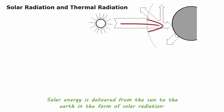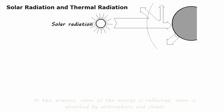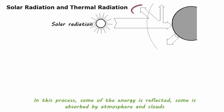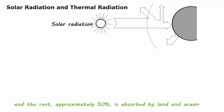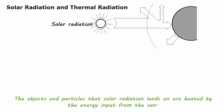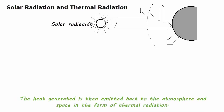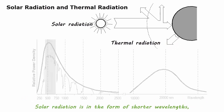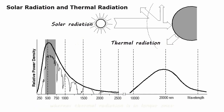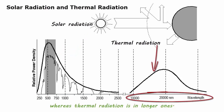Solar energy is delivered from the sun to the earth in the form of solar radiation. In this process, some of the energy is reflected, some is absorbed by atmosphere and clouds, and the rest — approximately 50% — is absorbed by land and ocean. The objects and particles that solar radiation lands on are heated by the energy input from the sun. The heat generated is then emitted back to the atmosphere and space in the form of thermal radiation. Solar radiation is in the form of shorter wavelengths, whereas thermal radiation is in longer ones.